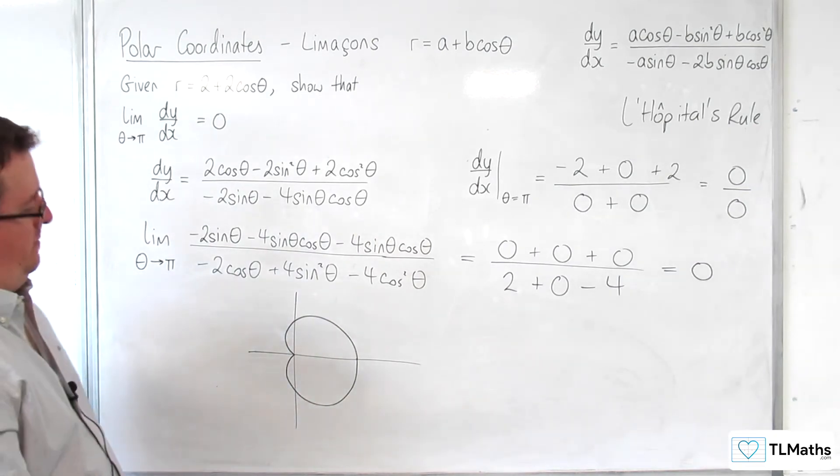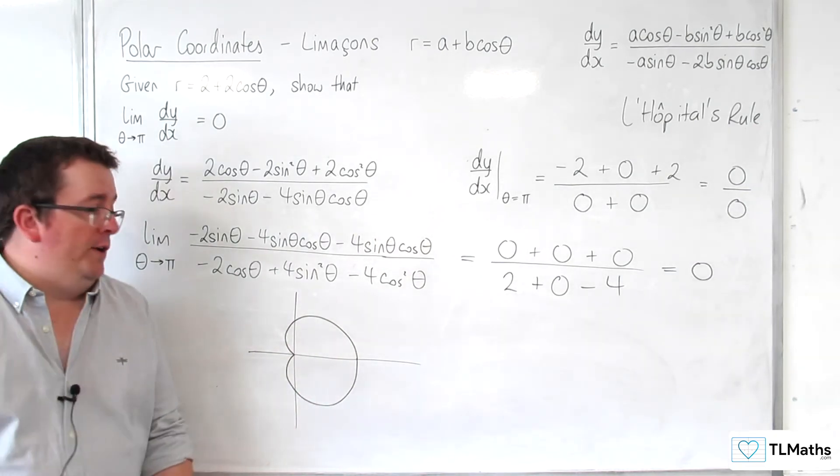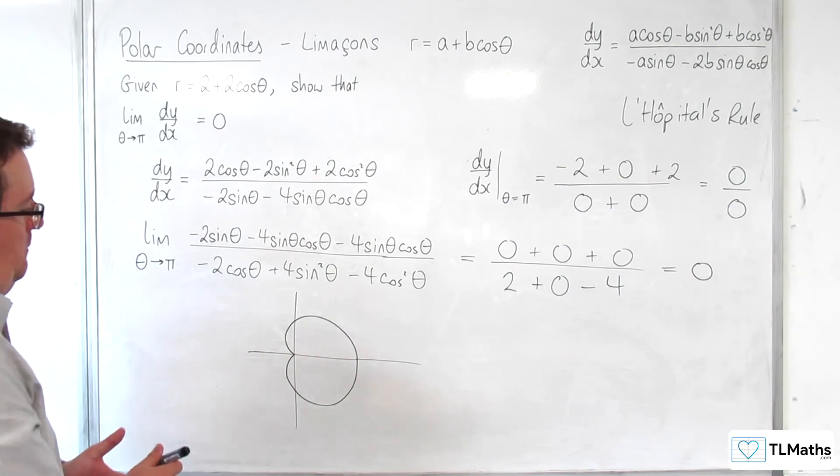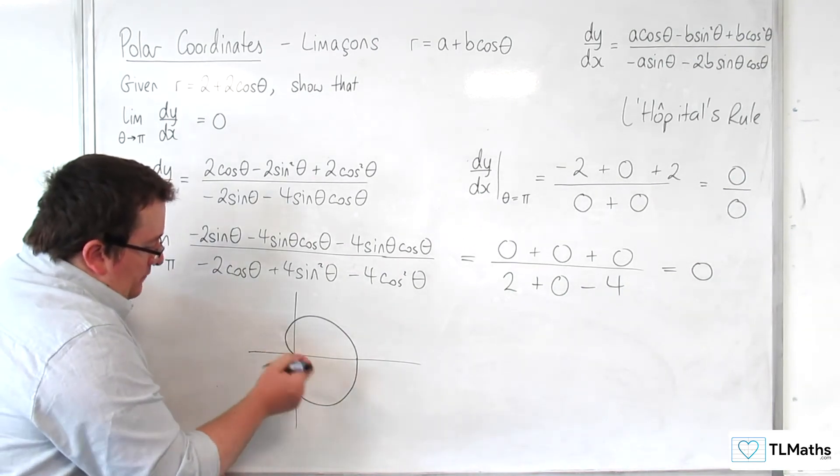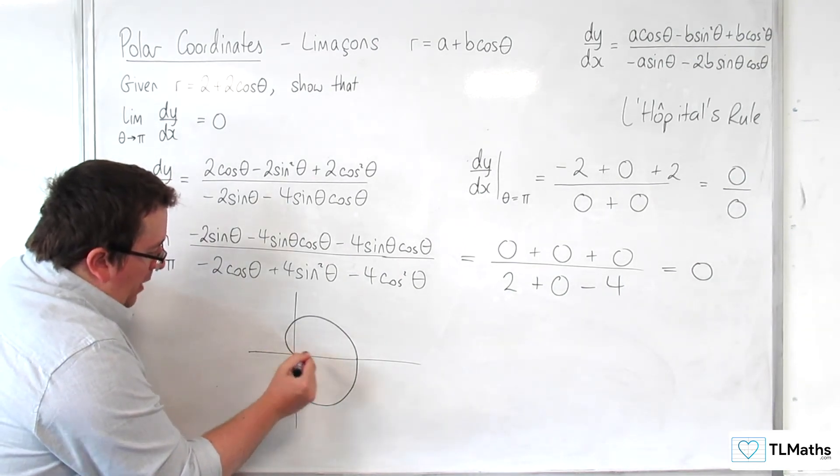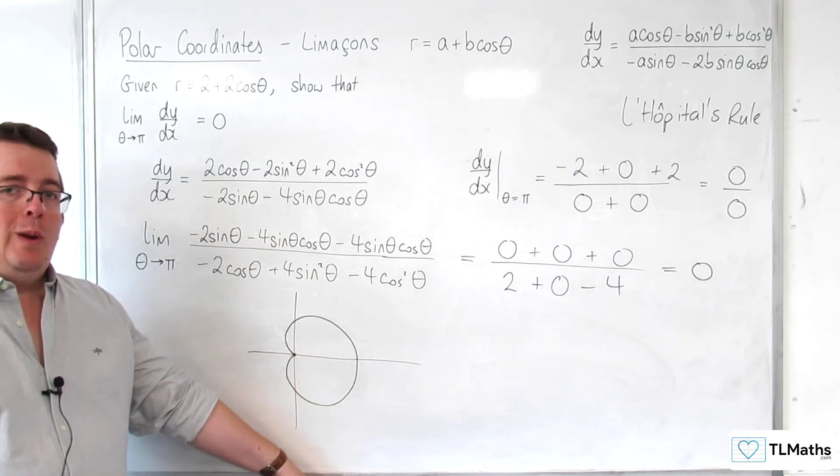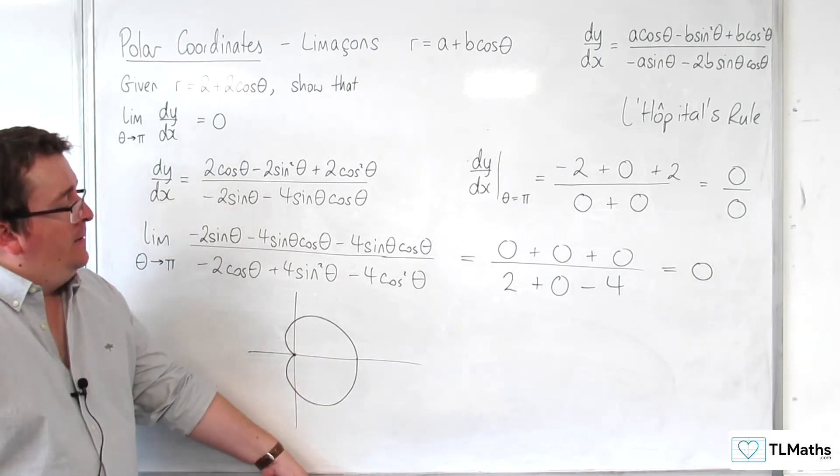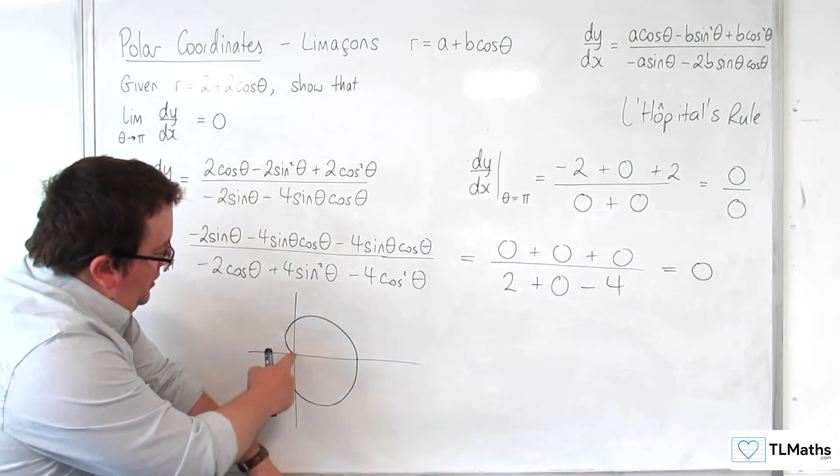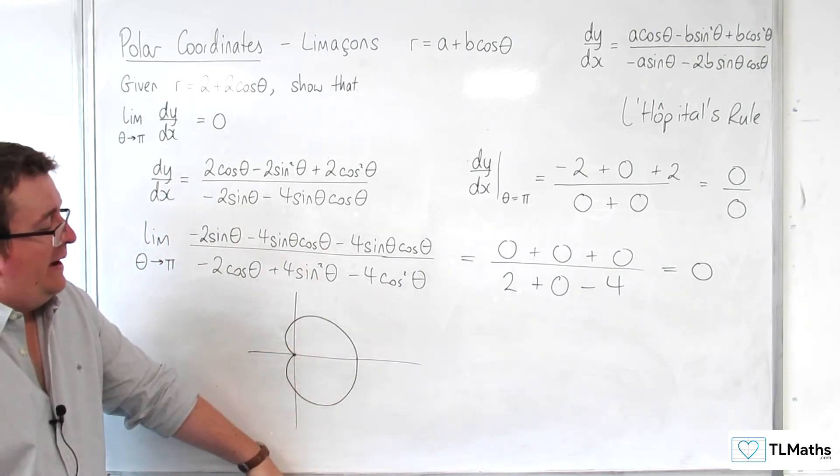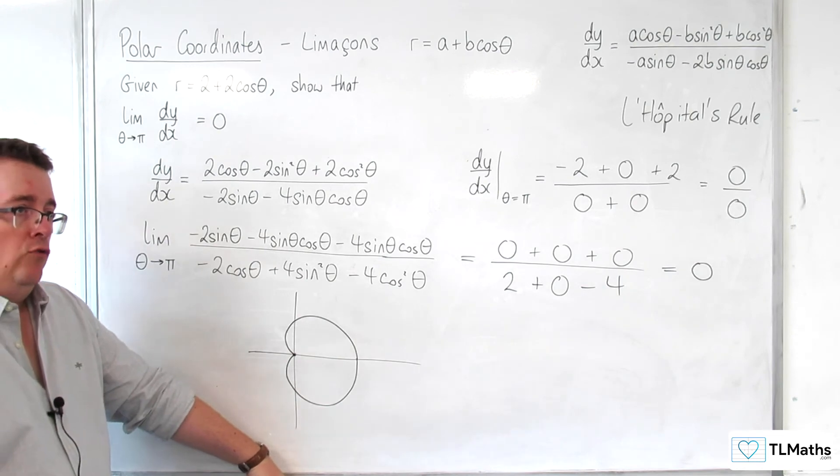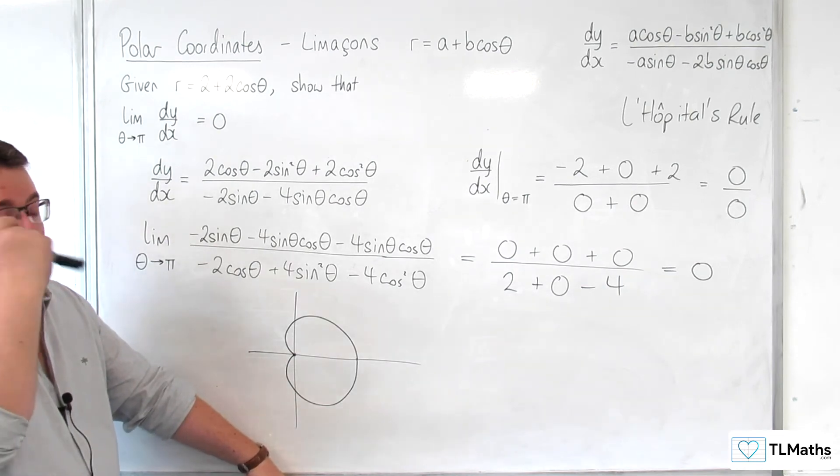It's going to be symmetric, but this is a cardioid. And the point is that here, at the origin, at the pole, we have what's referred to as a cusp. Now, with this point, we have that r is 0 and theta is pi.